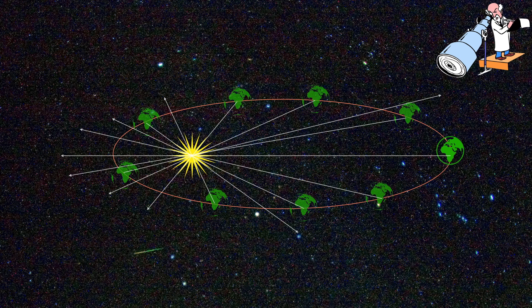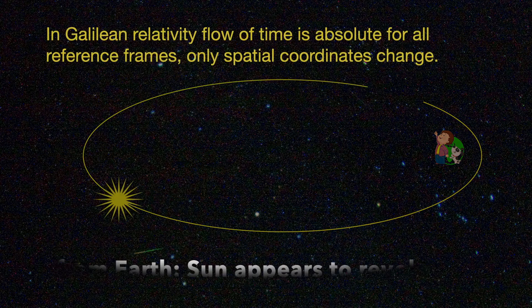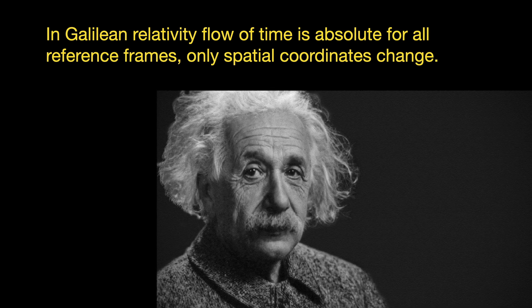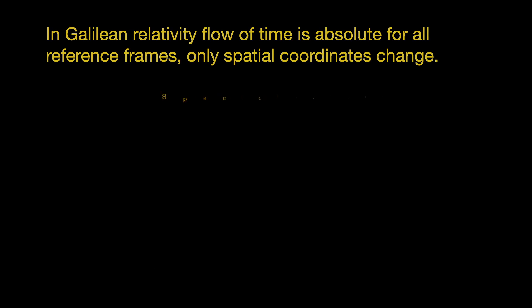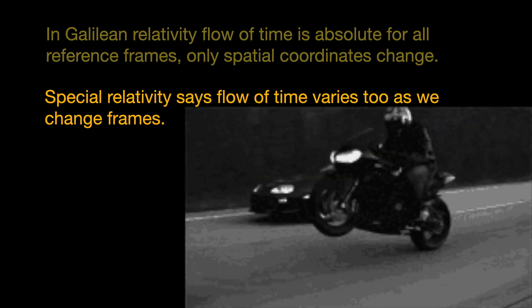In short, space coordinates change as the reference frame used by the observer changes, but time coordinate does not. And then, along came Einstein with his postulates of special relativity and told us that flow of time does change as the observer changes frames. Though, this effect only shows up if the relative velocity between the two frames is extremely high.